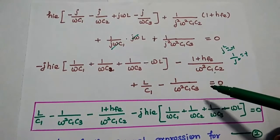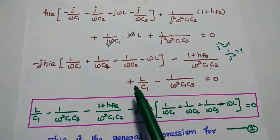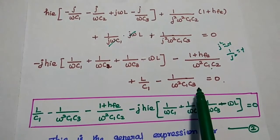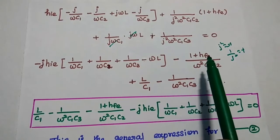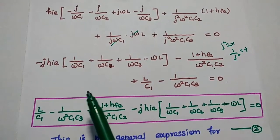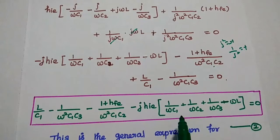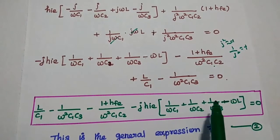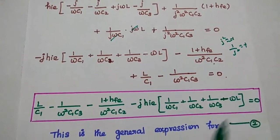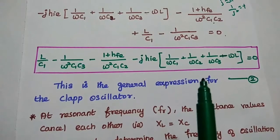This expression has a real part and an imaginary part. The real part is: L/C1 − 1/(ω²C1C3) − (1 + HFE)/(ω²C1C2) = 0. The imaginary part is: −HIE·[1/(ωC1) + 1/(ωC2) + 1/(ωC3) − ωL] = 0.